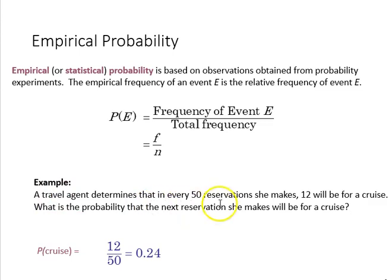An example: a travel agent determines that in every 50 reservations she makes, 12 will be for a cruise. We know that's going to be about 12 over 50, or about a quarter, about 0.24 to be more precise.